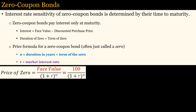Zero coupon bonds simplify the calculation of potential capital gains. Zero coupon bonds do not pay any coupons, hence the name, so the price of the bond depends only on the present value of its face value. The duration of a zero equals the term of the zero. This allows the construction of a spreadsheet model that can calculate how much a bond's price will change in response to a given change in interest rates for bonds that have the same duration.